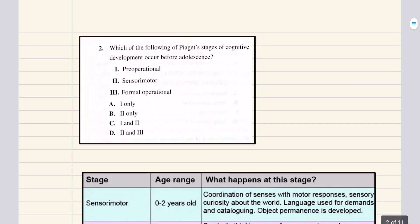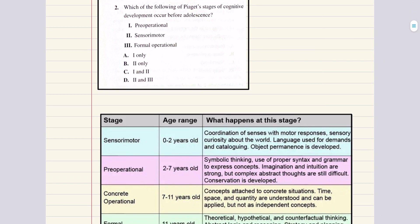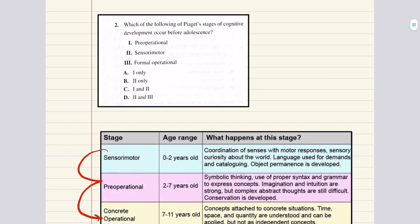Problem two says which of the following of Piaget's stages of cognitive development occur before adolescence? The sensory motor, preoperational, and concrete operational stages all occur prior to adolescence. The formal operational stage generally coincides with adolescence. So one is true and two is true but three is not. We're looking for an answer choice that says statement one and two are correct and that is answer choice C.